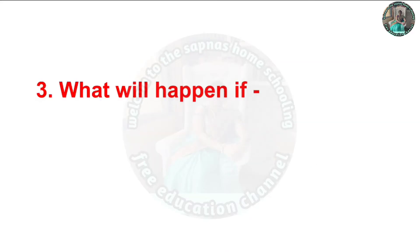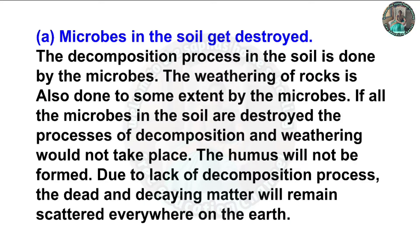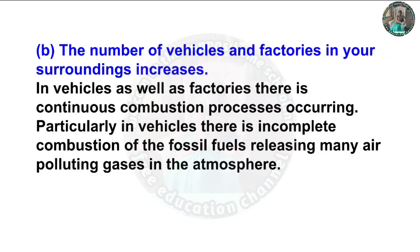Question 3(a): What will happen if microbes in the soil get destroyed? Answer: The decomposition process in the soil is done by microbes. Weathering of rocks is also done to some extent by microbes. If all the microbes in the soil are destroyed, the processes of decomposition and weathering would not take place. Humus will not be formed, and dead and decaying matter will remain scattered everywhere on the earth.